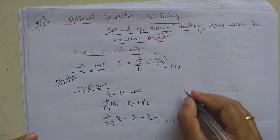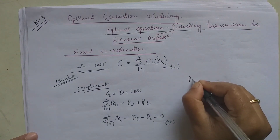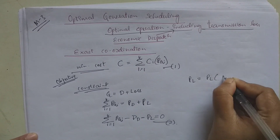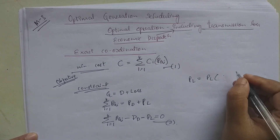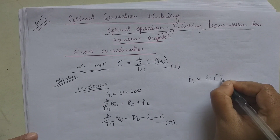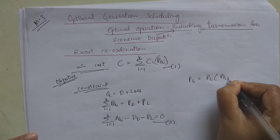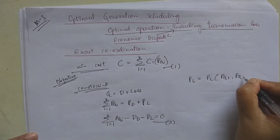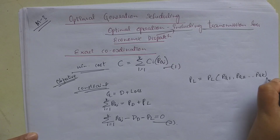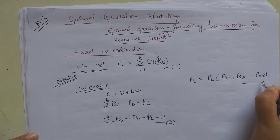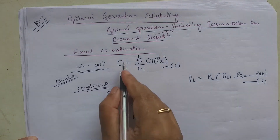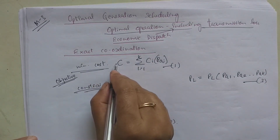Here P_L is a function of active power generation at each plant, that is, P_L is a function of P_G1, P_G2, up to P_Gk — take this as equation 3.